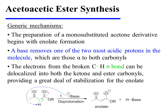The preparation of a mono-substituted acetone derivative begins with enolate formation. A base removes one of the two most acidic protons in the molecule — those on the position alpha to both carbonyls. The electrons from the broken carbon-hydrogen sigma bond can be delocalized into both the ketone and the ester carbonyls, providing a great deal of stabilization for the enolate.